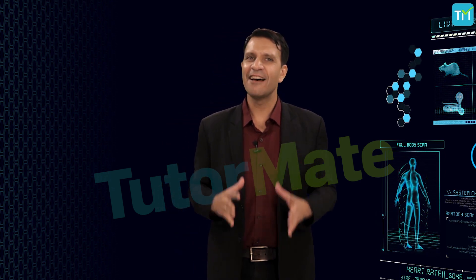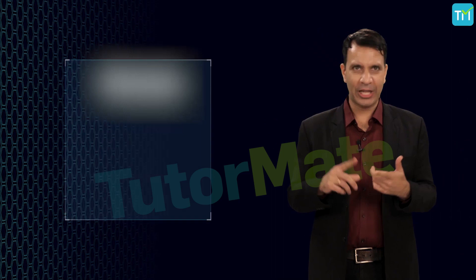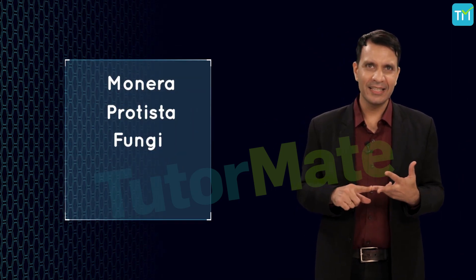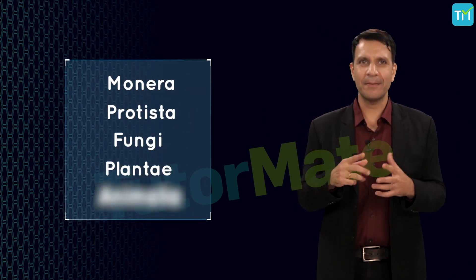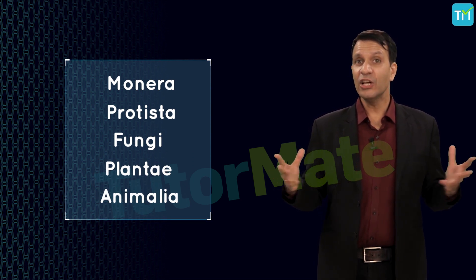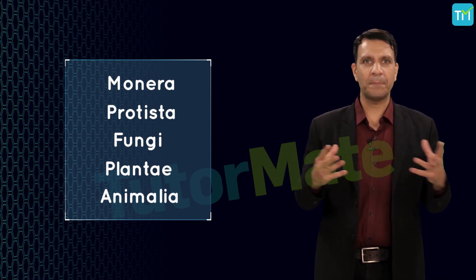So the current classification which is widely used was proposed by Whittaker and has five kingdoms: Monera, Protista, Fungi, Plantae, and Animalia. Again, these groups are formed on the basis of three factors.